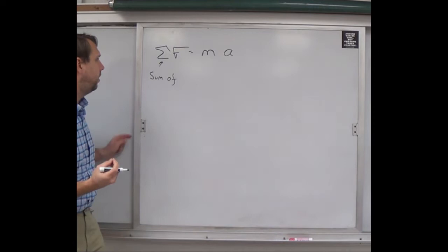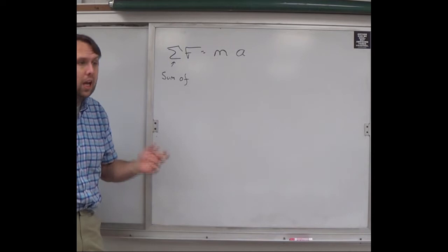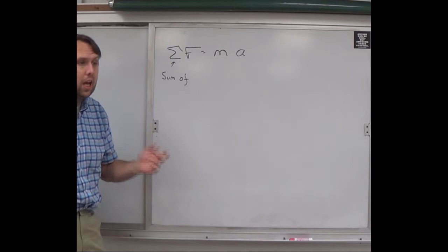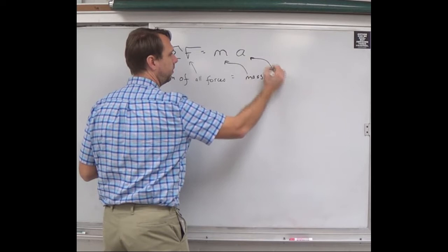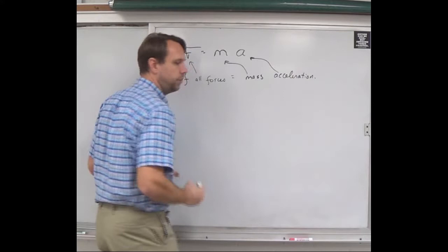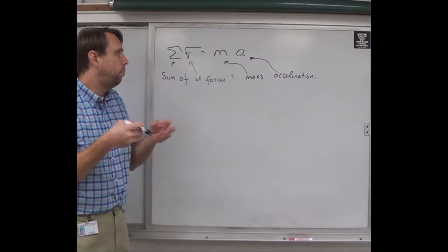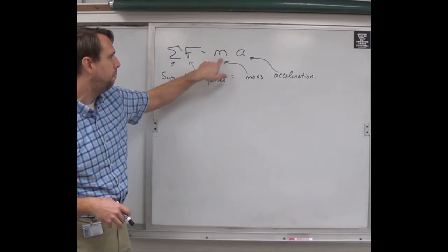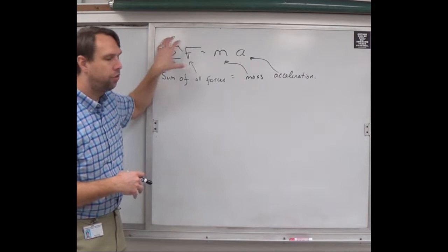So if you have six forces acting on an object, you have to add them all up. In this class, we typically only add forces in one direction — either the x-axis or the y-axis at a time — so typically it's one, two, or occasionally three forces. But the sum of all forces equals mass times acceleration. You can apply this to a single object or to a system of multiple objects, using the total mass to find the force on the whole system.